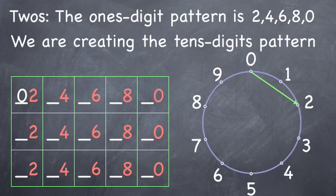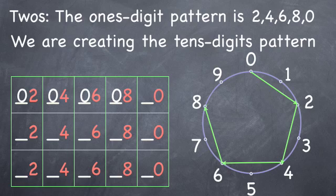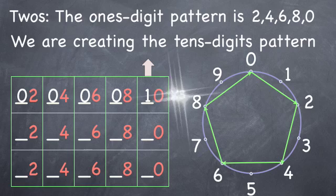The tens digits start with zero in front of the first two. They continue with zero and when the ones digits reach zero on the number wheel, the tens digits go up to 1.